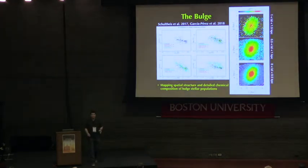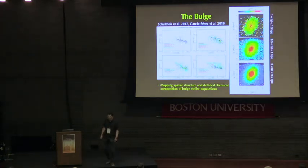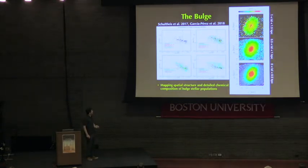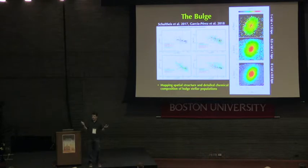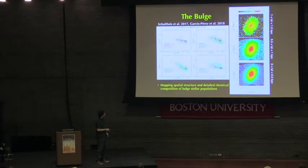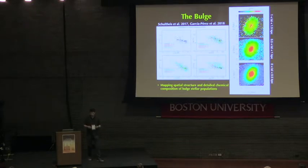Now, jumping to the bulge. The bulge is interesting because it's a galactic component that is very hard to understand, very hard to model, and very hard to observe. We have a fairly large sample in the bulge — several thousand stars. This plot shows the first foray into doing multiple abundances for the bulge: 15 elemental abundances, and this shows the distribution of stars of different metallicities in 3D.